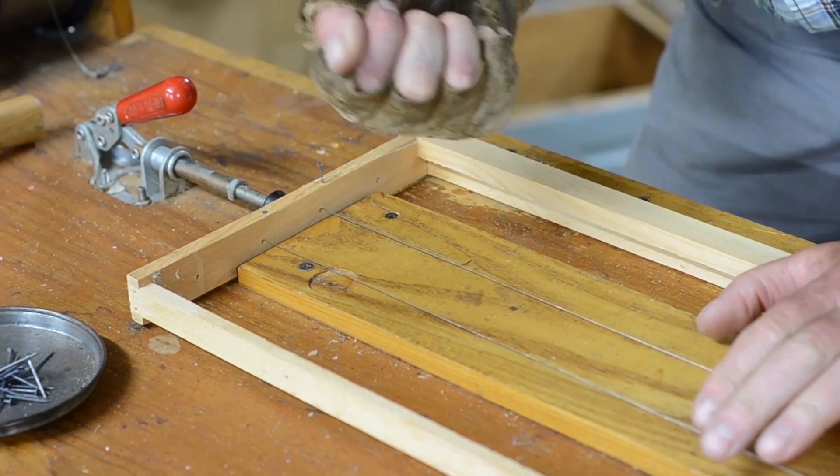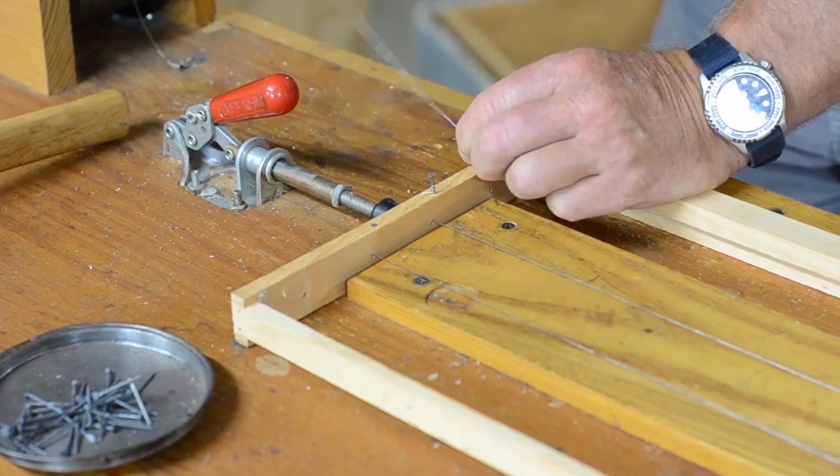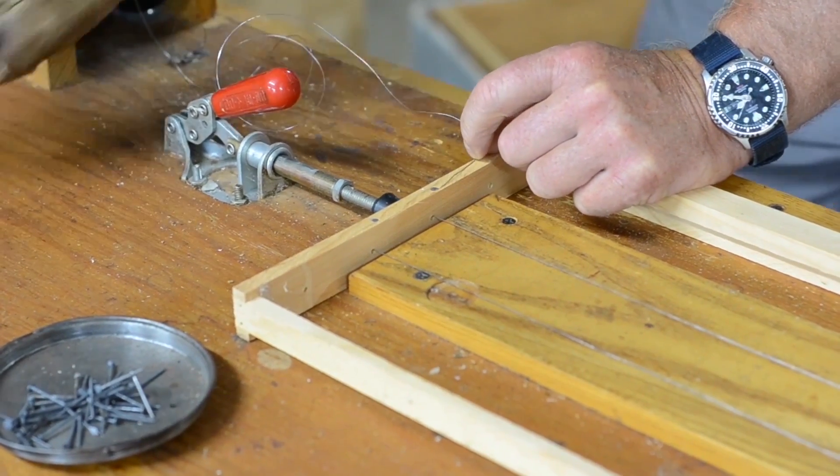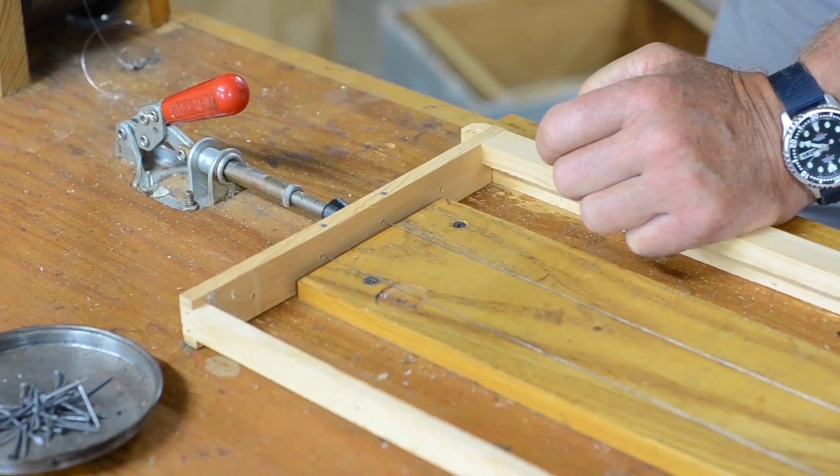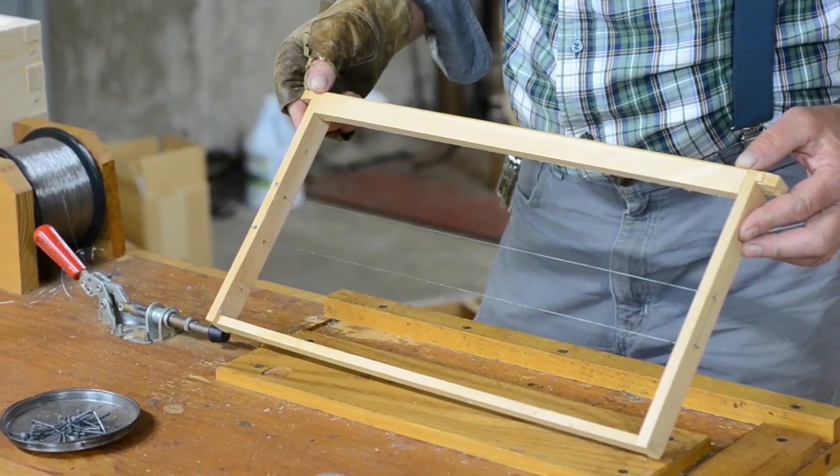There we go and then we wrap it around here two or three times and drive it home and just bend it over back and forth and that will break the wire. So there's the wired frame. Next we install the foundation.